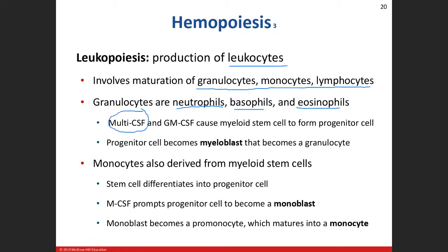What we saw before in erythropoiesis with the multi-colony stimulating factor, now we have that plus another colony-stimulating factor which is going to help propagate the myeloid stem cell to then differentiate into one of our myeloblasts and then into a granulocyte.